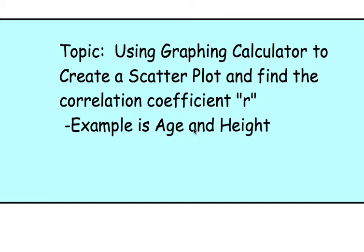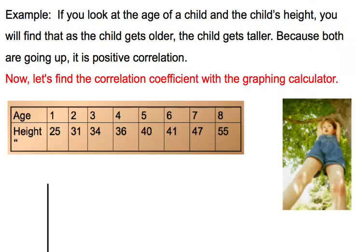We're going to use the graphing calculator to create a scatter plot, find the correlation coefficient, and the line of best fit. Here's our example: if we look at the age of a child and the child's height, you'll find as the child gets older, the height of the child gets taller. Because both are going up, it's a positive correlation.